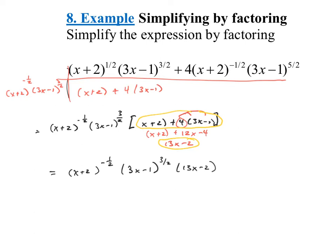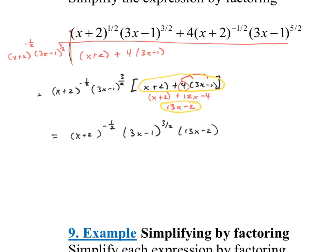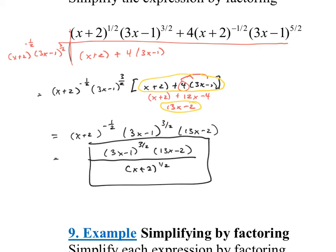That's almost perfect form, but we have a negative one half exponent — we can't have negative exponents in our final answer. With a negative exponent, we throw it into the denominator. That is the only term going to the denominator since it's the only one with a negative exponent. So the final answer is: 3x minus 1 to the three halves times 13x minus 2 in the numerator, over x plus 2 to the positive one half in the denominator.